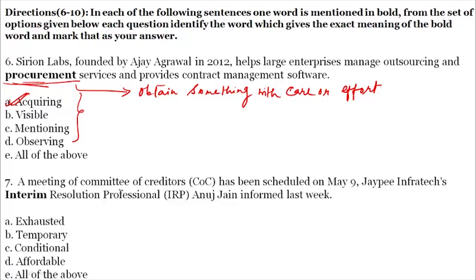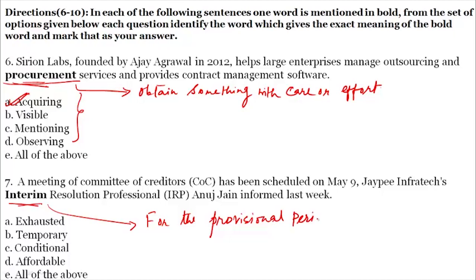Question number 7. 'A meeting of the committee of creditors, the COC, has been scheduled on May 9th. JP Infratex Interim Resolution Professional Anuj Jain informs last week.' The bold word is 'interim.' Interim means for the provisional period — that is, for some time. This word is related to time. The root word is 'temp' — T-E-M-P — meaning time. Temporal, temporary — these are all related to time. So the synonyms of interim will be 'temporary' and the answer will be B.